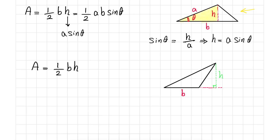For the circumference of a triangle, it is simply the summation of all three sides. Also please note that the sum of the three angles of any triangle is always 180 degrees. If we have the angles alpha, beta, and theta, then alpha plus beta plus theta equals 180 degrees, or in radians it equals pi. This is another important property of triangles in addition to the area and circumference.